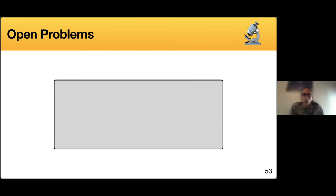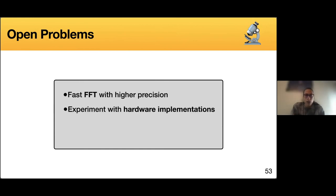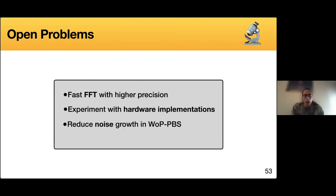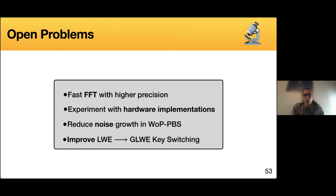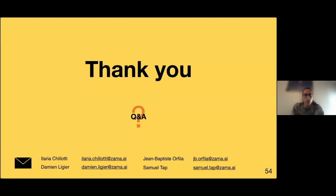Finally, some open problems that still need to be solved: we need to look at the FFT, since the tensor product requires a high-precision FFT. We also want to experiment with hardware implementation as it will be easy to parallelize everything and to play with precision inside the FFT. We want to find alternatives to the bootstrapping without padding due to noise growth in those algorithms. And we want to improve the LWE to GLWE key switch, which is currently a large part of the complexity of WoPBS. Thank you for listening.